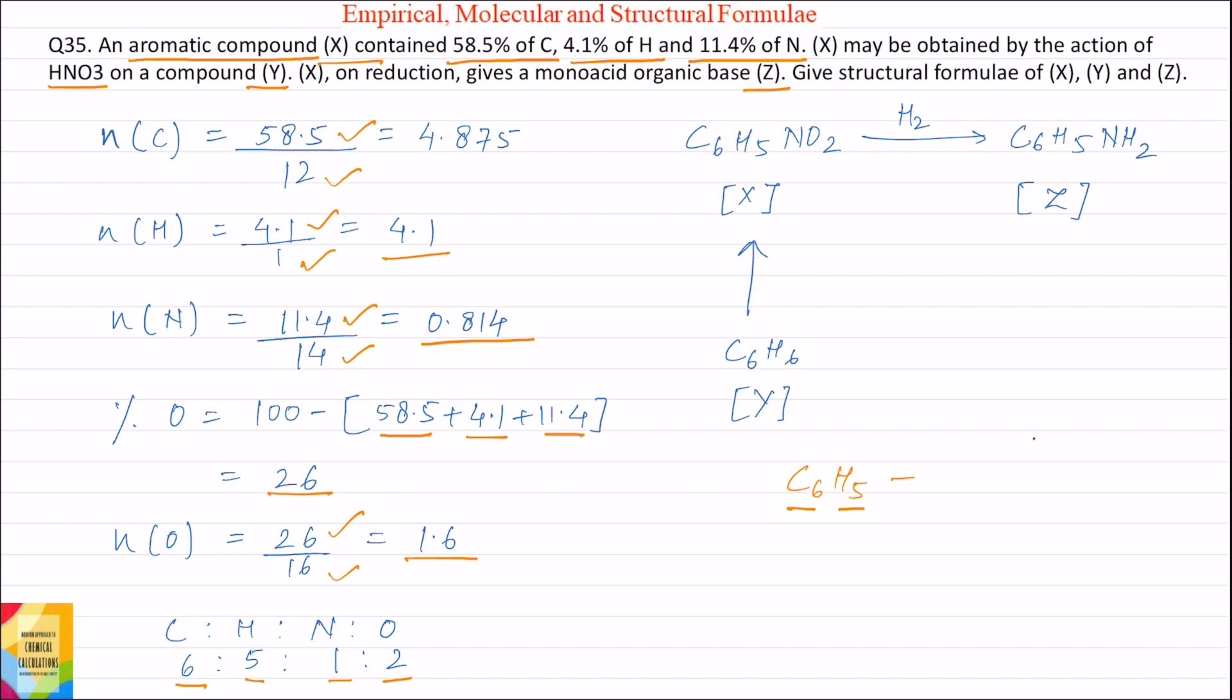Now remaining is 1 nitrogen and 2 oxygen. So 1 nitrogen and 2 oxygen make up the functional group that is NO2 group. Therefore, X is C6H5NO2.